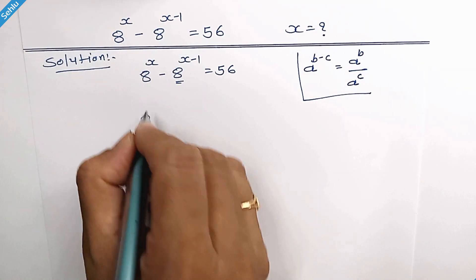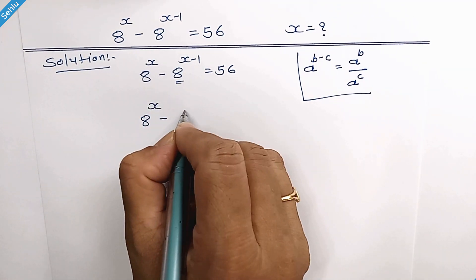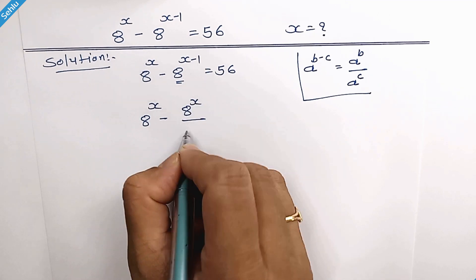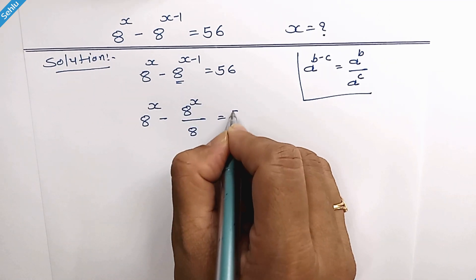So it will be 8 to the power x minus 8 to the power x over 8 is equal to 56.